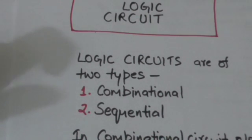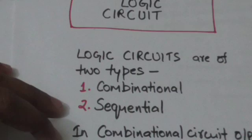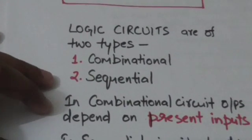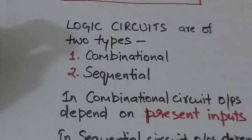Combinational logic circuits consist of only logic gates. In combinational circuits, outputs depend on present inputs.